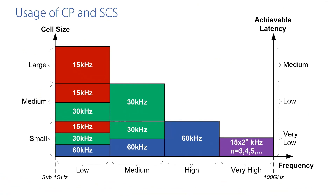As you increase the frequency, you'll naturally move up through the different numerologies in line with the standards and the frequency bands. So be mindful that all these factors — frequency band, numerology, cell size, latency — have a role when it comes to 5G deployment. Different service providers have positioned themselves depending on the frequencies they're deploying with, and whether it's a small or large cell, looking at latency and other attributes associated with their numerologies and frequencies of deployment.